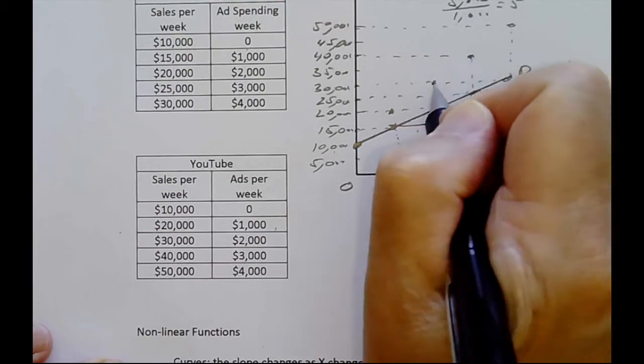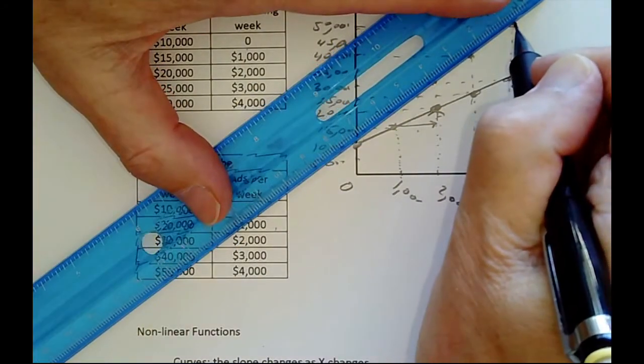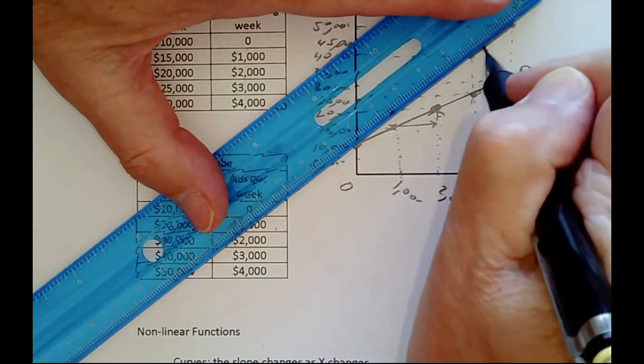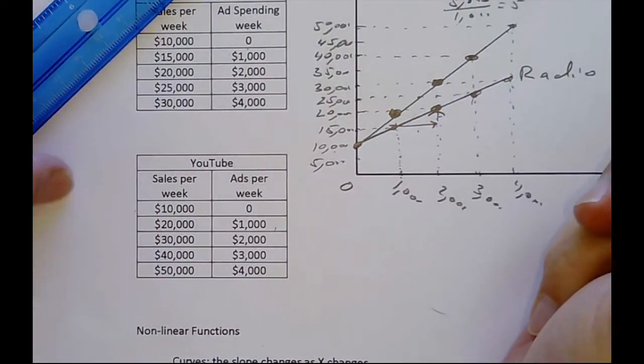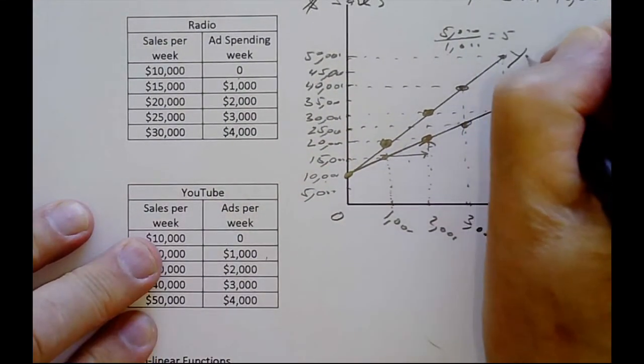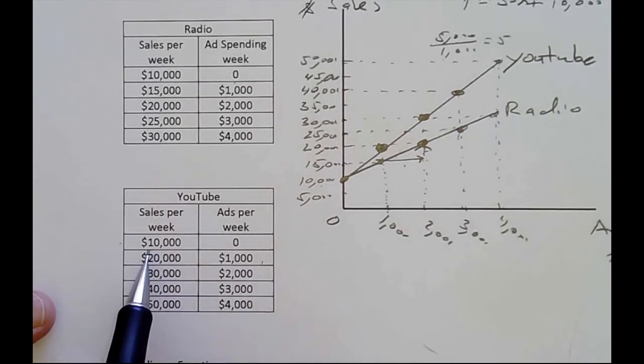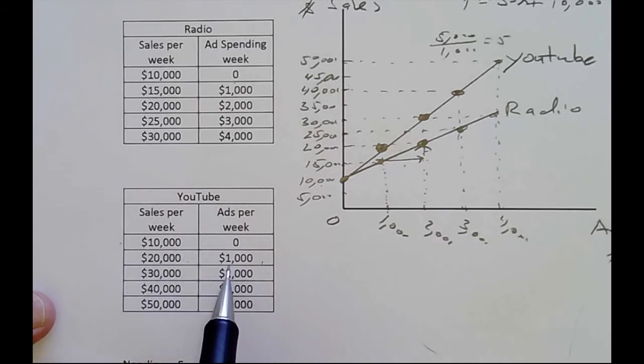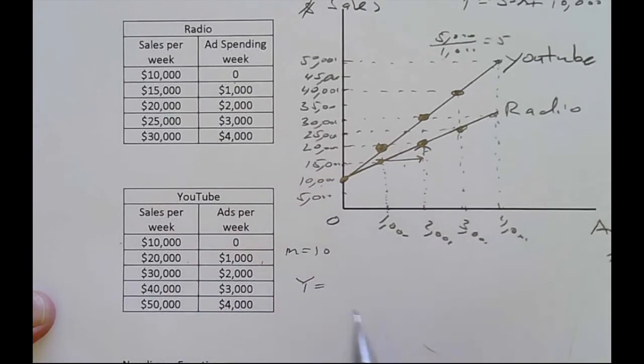And this is for YouTube. What's the equation for YouTube? Well, it starts at $10,000 also. But every time we increase our ads by $1,000, we increase our sales by $10,000. That would be $10,000 over $1,000. So the slope here would be 10. The equation would be Y, our sales, equal to 10X plus $10,000 for the y intercept.